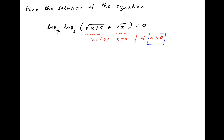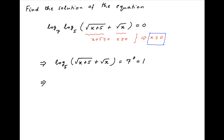Now, using properties of logarithms, this equation implies that log of (root of x plus 5 plus root of x) to the base 5 is equal to 7 raised to the power 0, which is equal to 1. Again using properties of logarithms, this implies that root of (x plus 5) plus root of x is equal to 5 raised to the power 1, which is equal to 5.